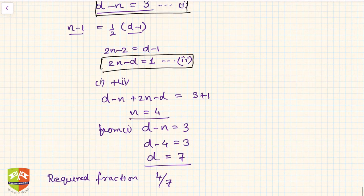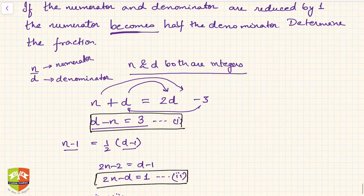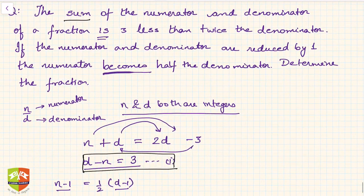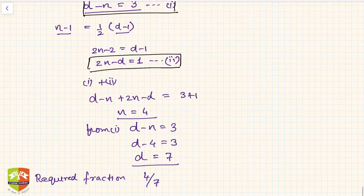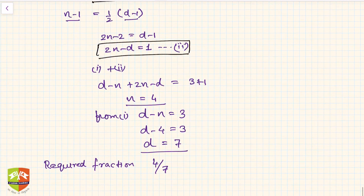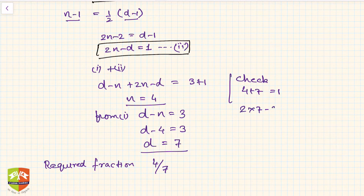So first condition was that sum of the numerator and denominator of a fraction is 3 less than twice the denominator. Let us check. Sum of this will be 4 plus 7 equals 11. Now this must be 2 times 7 minus 3, twice the denominator minus 3, which is 11. So both are matching. Hence, it is correct.